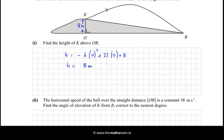The horizontal speed of the ball over the straight distance OB is a constant 38 metres per second. Find the angle of elevation of K from B correct to the nearest degree. OK, well, we would like to know the horizontal distance, I'll call it D, from O to B. So, how could we find D?